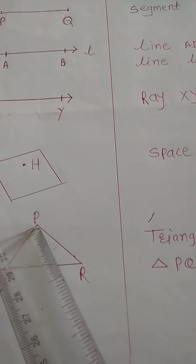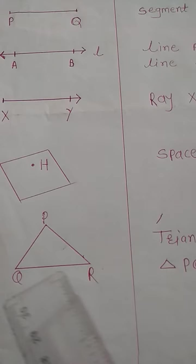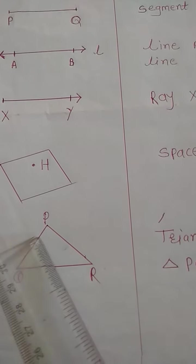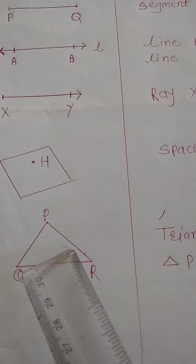For example, vertex P, vertex Q, and vertex R. Triangle has three sides: side PQ, side QR, and side PR.